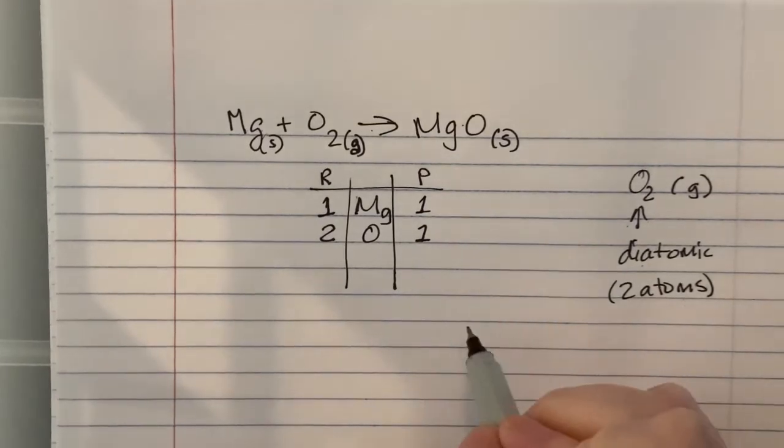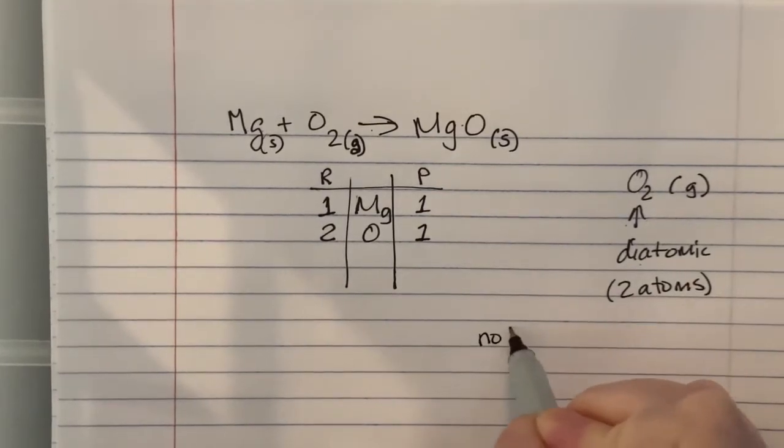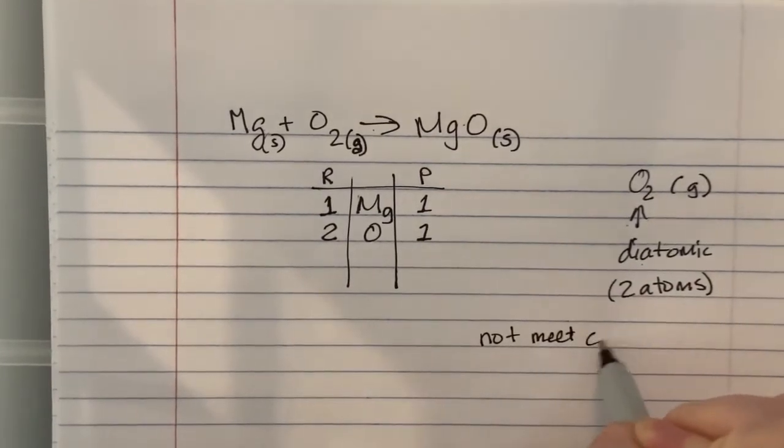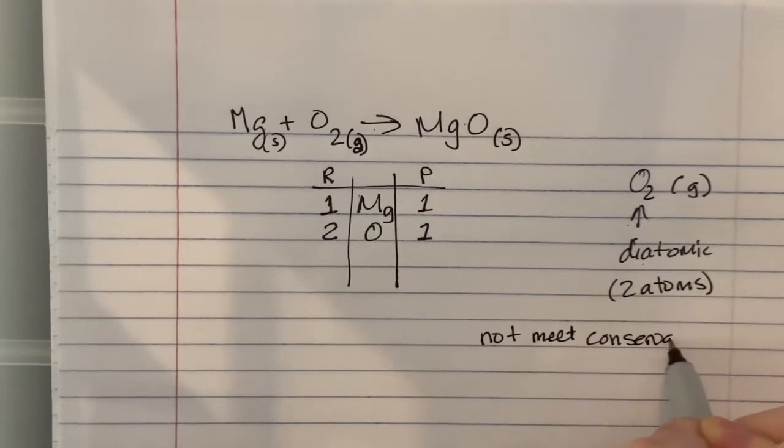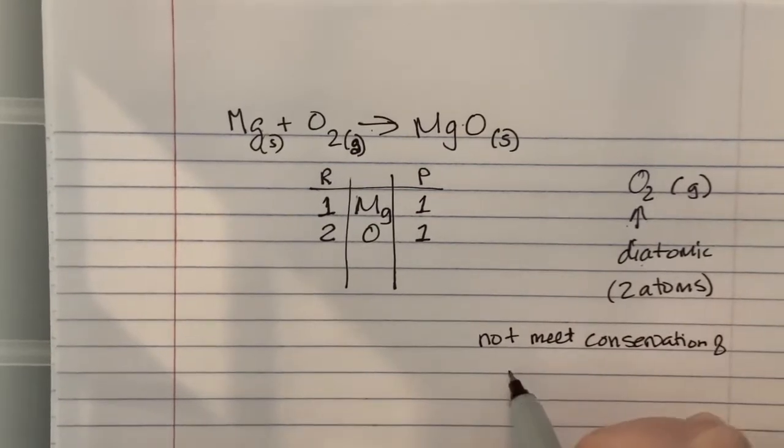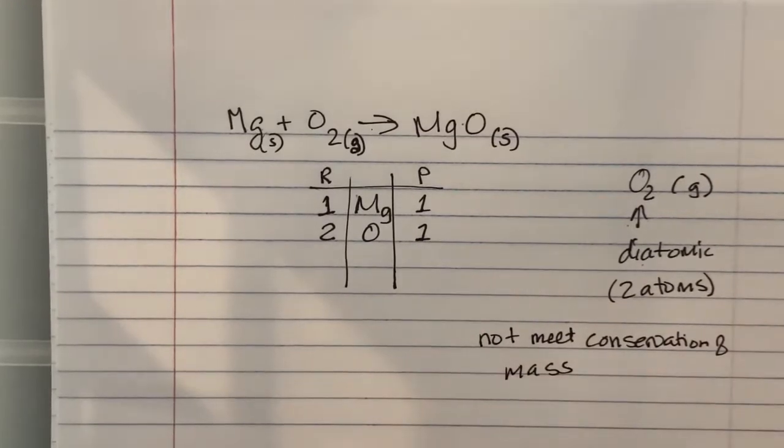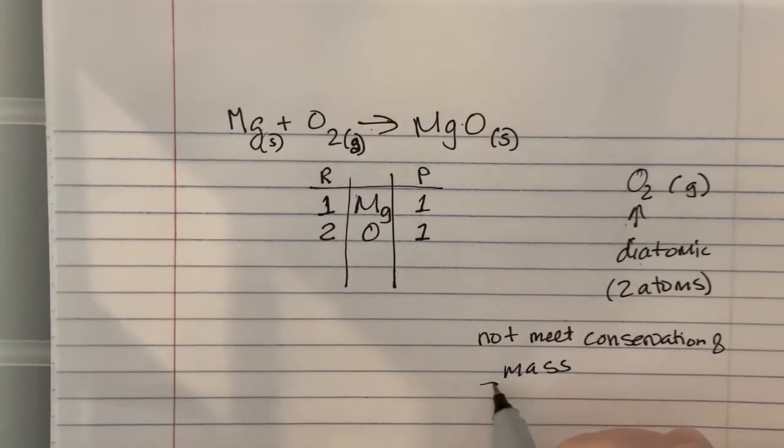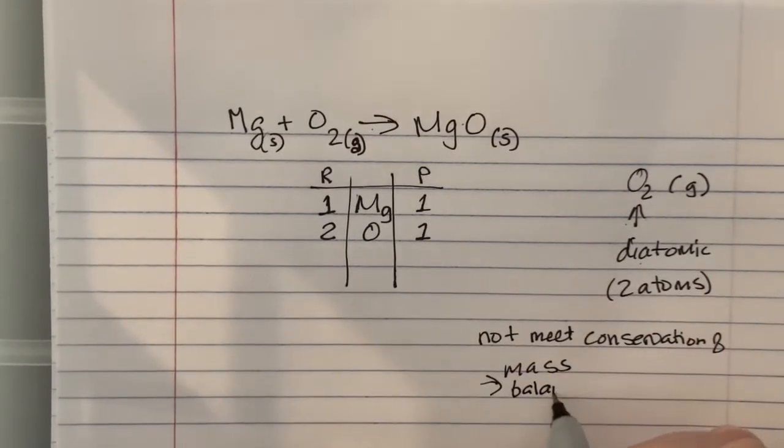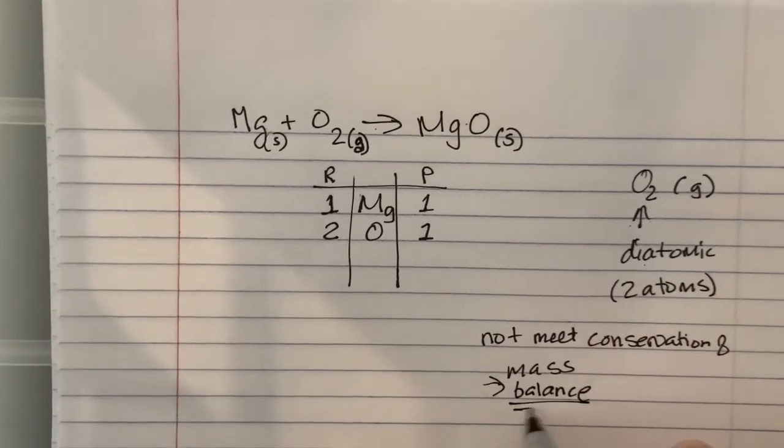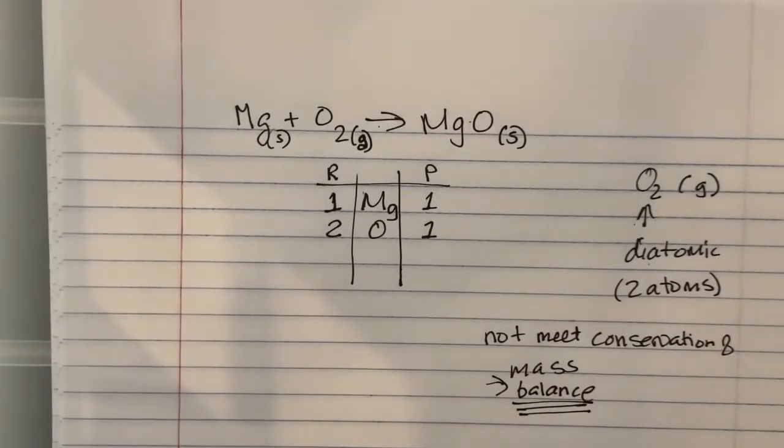So we're not balanced, so we do not meet conservation of mass, which says that matter cannot be created nor destroyed. We have to balance it every time. Never leave an equation unbalanced because it won't meet conservation of mass. You won't get credit unless it's balanced.